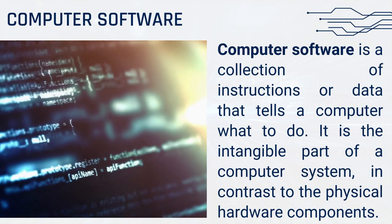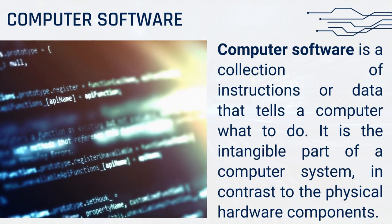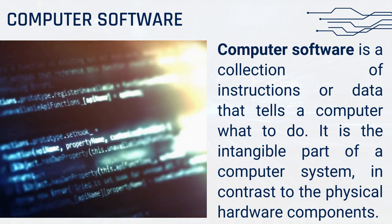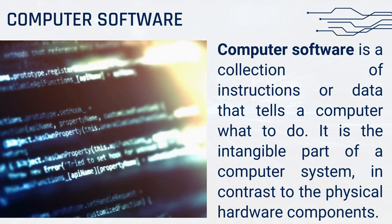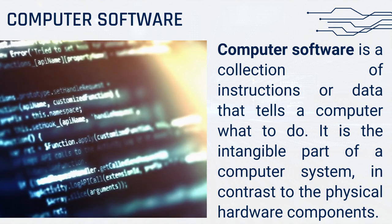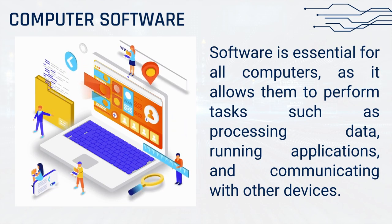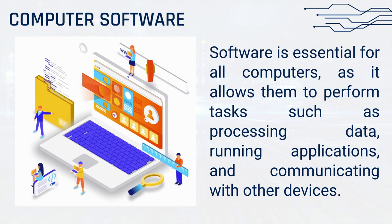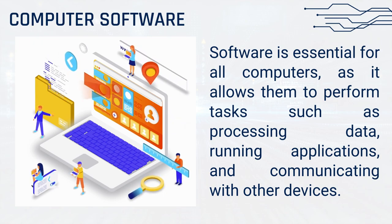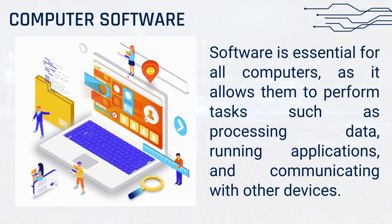Computer software is a collection of instructions or data that tells a computer what to do. It is the intangible part of a computer system, in contrast to the physical hardware components. Software is essential for all computers, as it allows them to perform tasks such as processing data, running applications, and communicating with other devices.